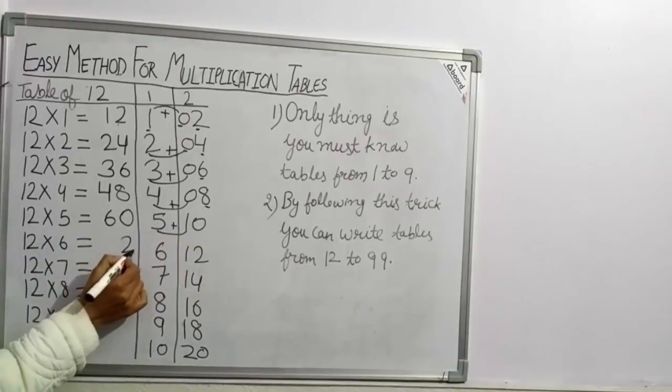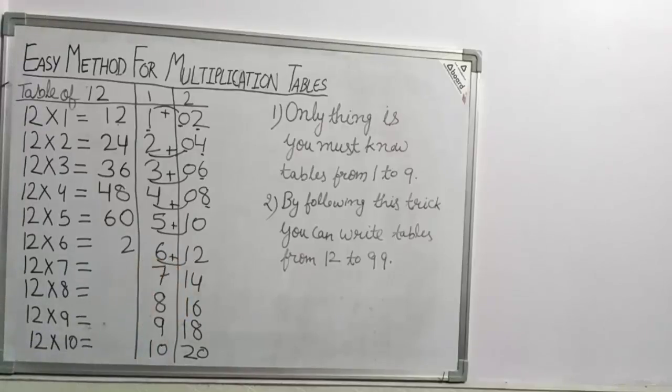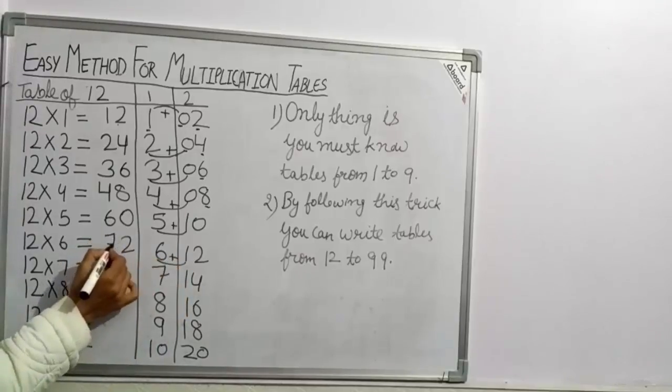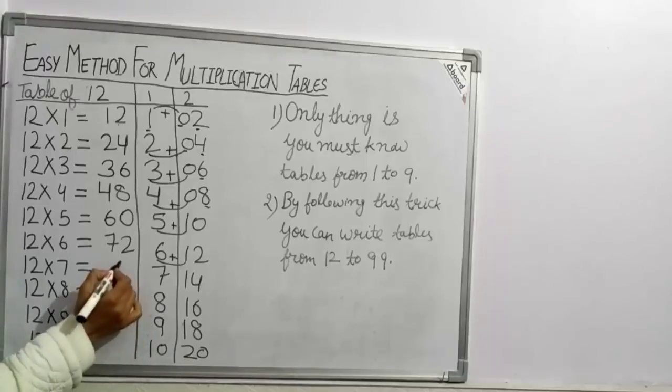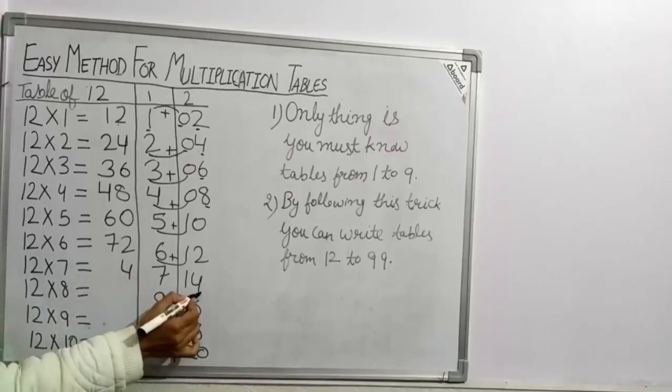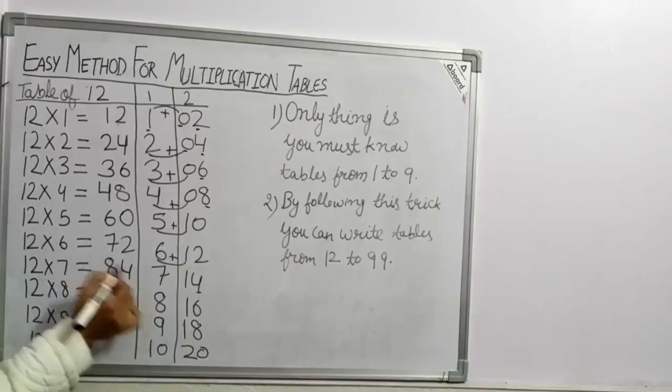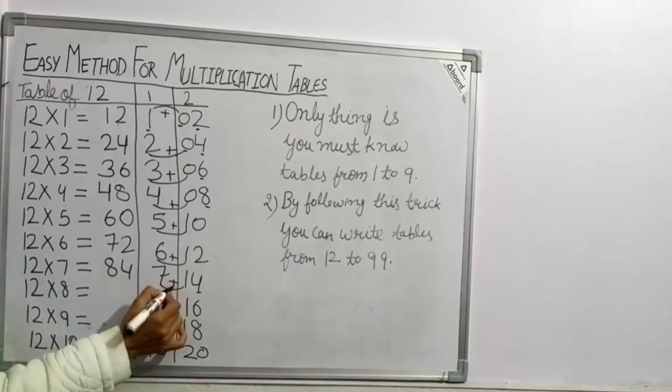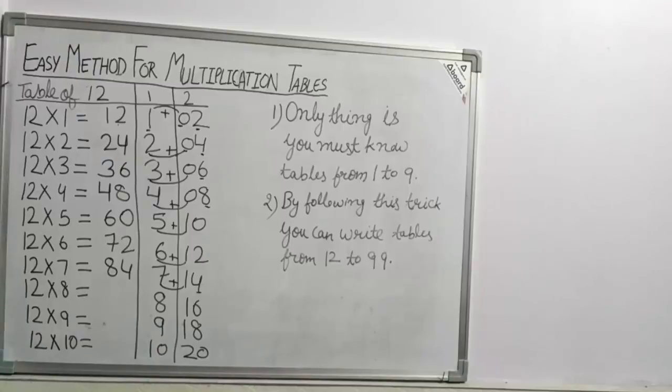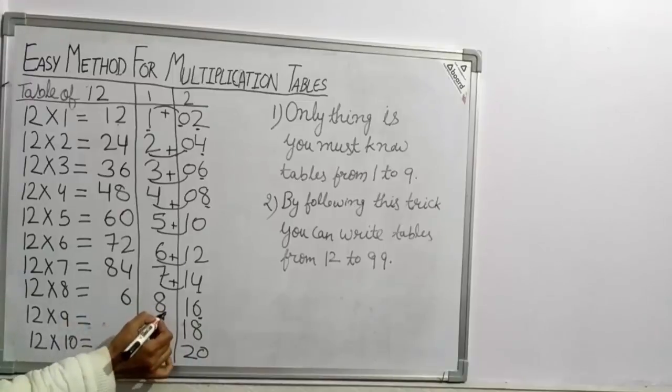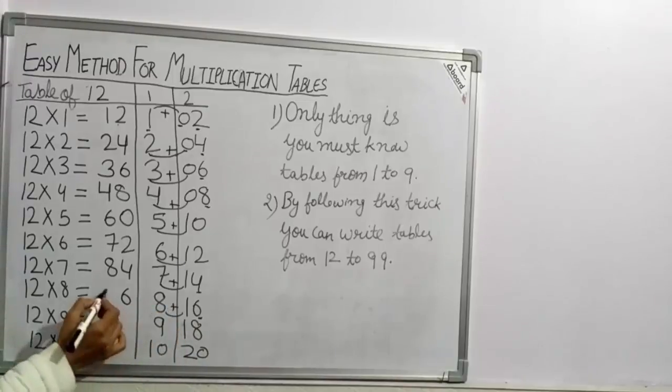2 as it is, 6 plus 1, 7. 12×6 = 72. Take 4, unit place of table 2 as it is. Now 7 plus 1 is 8. 7 plus 1 is 8. 12×7 = 84.